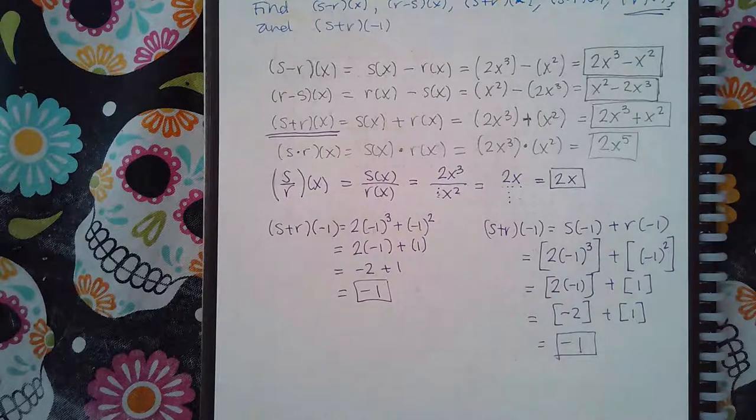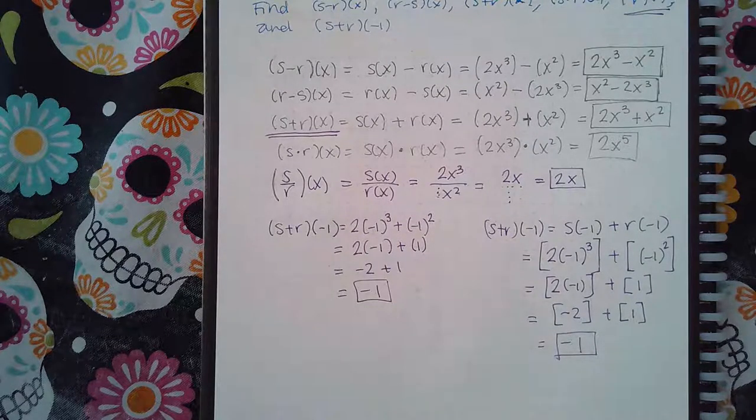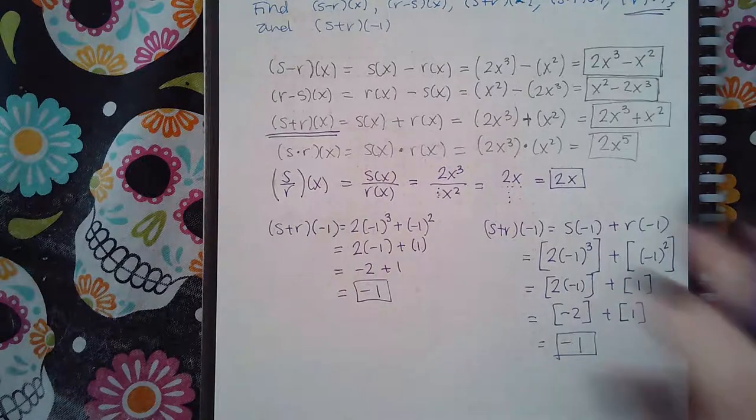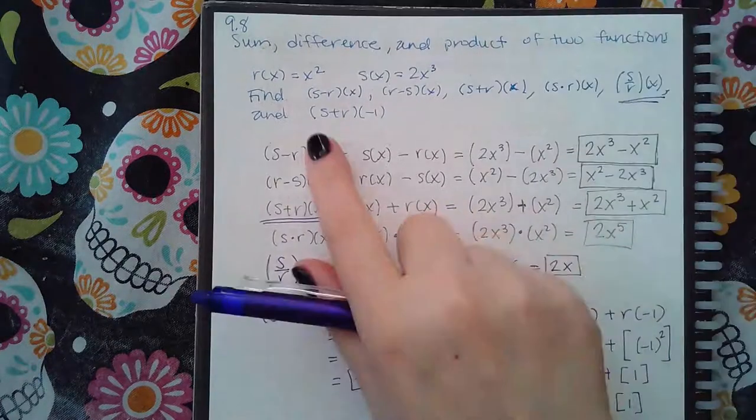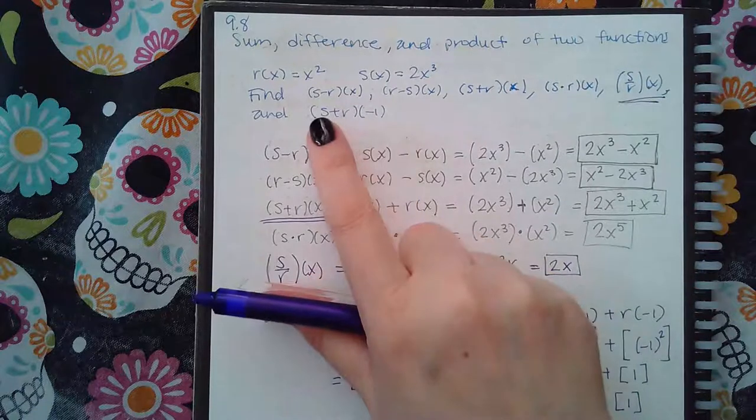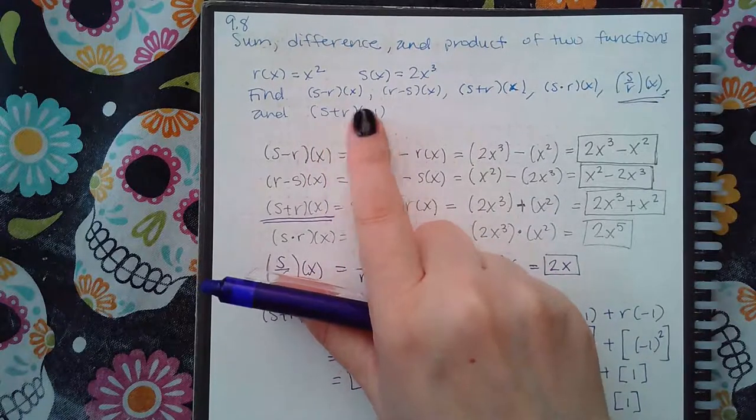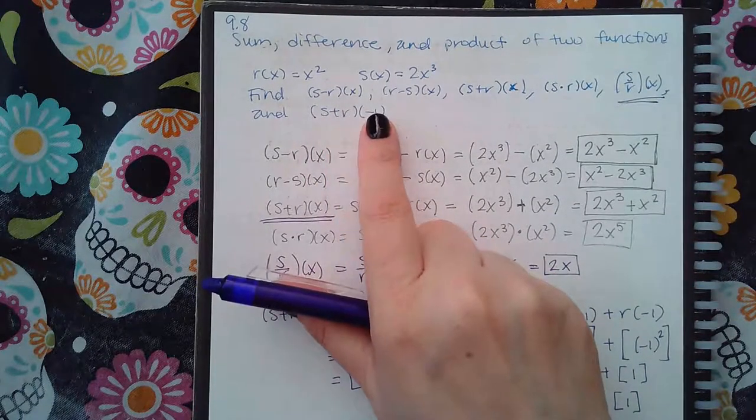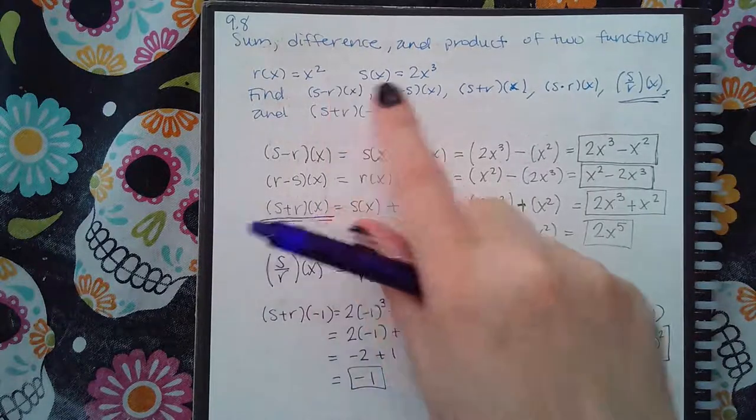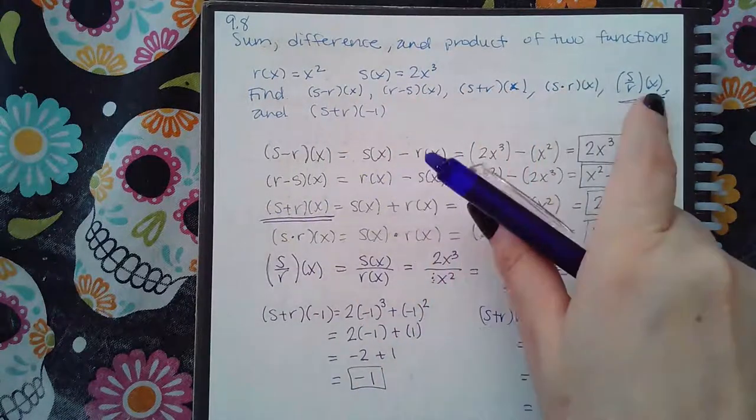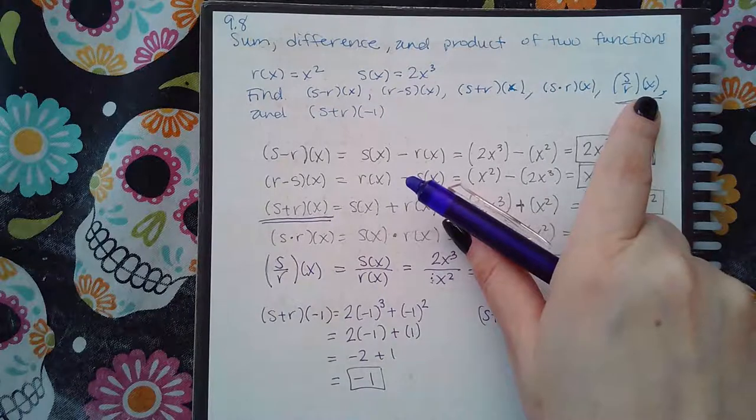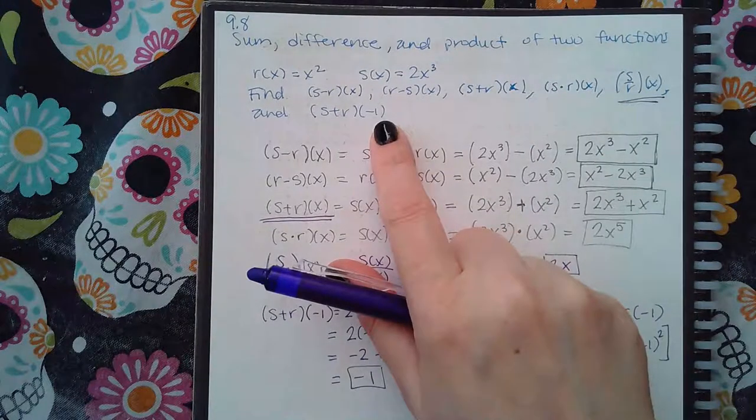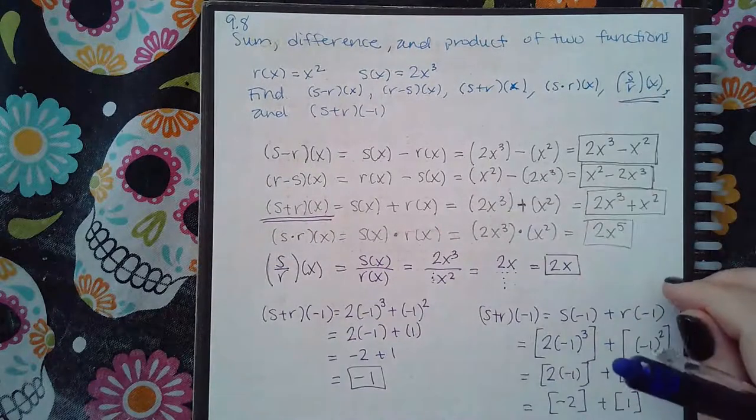But that's pretty much it for this section. Now it will get a little bit different - they're not always going to ask you (s + r) of a number. They could ask you (s - r) of a number, they could ask you (s times r) of a number. So this is all going to depend, and they're not going to ask you for all of these. I think they can ask you for two of them and then the one with the number.